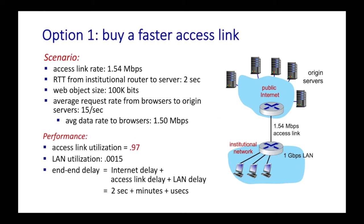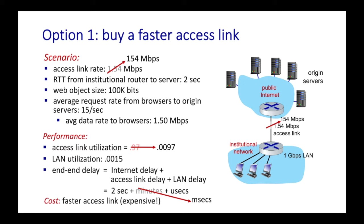What are we to do here? How can we improve user performance? The first option is just to buy a faster access link. For instance, we could upgrade from 1.54 megabits per second to 154 megabits per second. That's going to decrease the access link utilization to 0.0097, meaning short queuing delays for packets coming into the network. This will solve our problem — of course, the issue is that a faster access link could be very expensive.